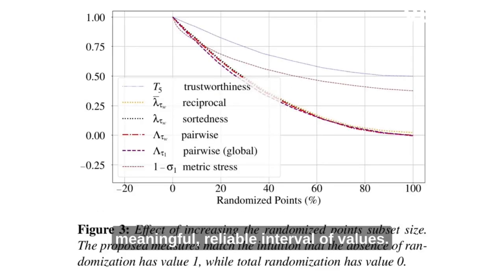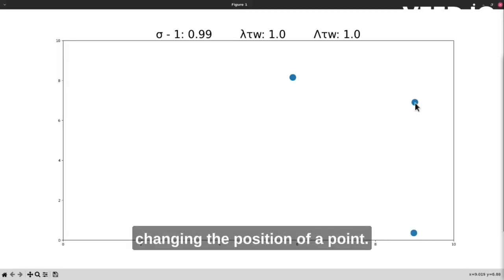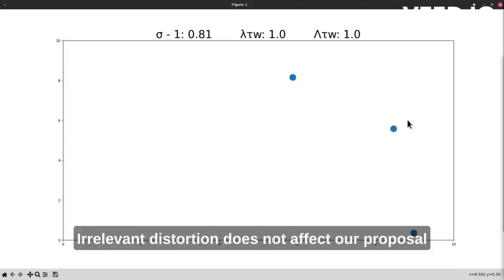It also provides a more meaningful, reliable interval of values. Here we can see the effect of changing the position of a point. Irrelevant distortions don't affect our proposed measures, which provide different levels of sensitivity.